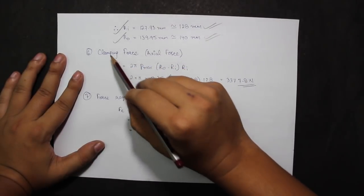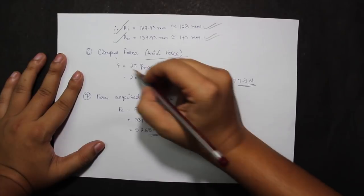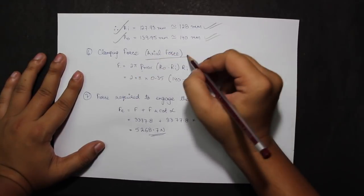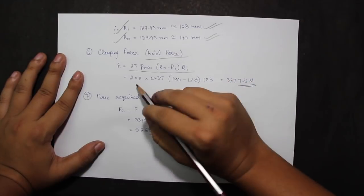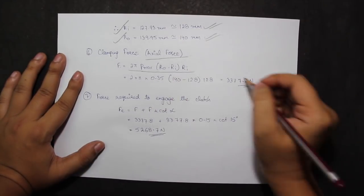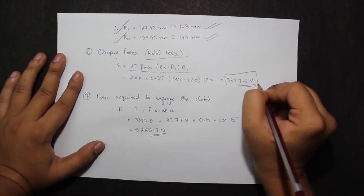Next I need to find the clamping force, or the axial force. As we all know, the formula to find the F value is 2 pi Pmax r0 minus ri into ri. All the values are known and calculated. So I get the value for clamping force as 3377.8 N.